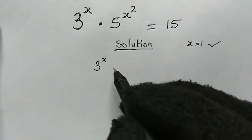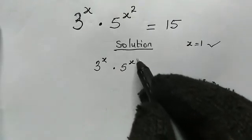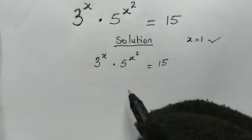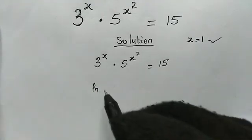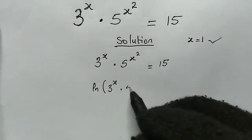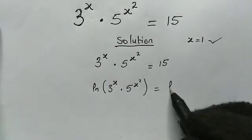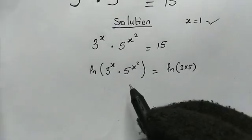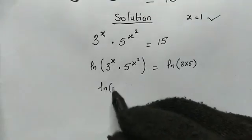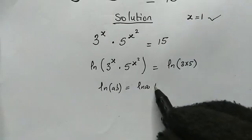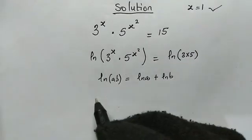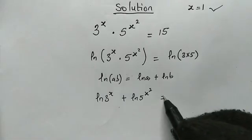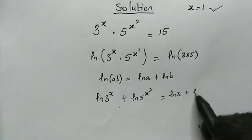So here we have 3 to the power of x multiplied by 5 to the power of x squared, and this is equal to 15. From here let us take the natural log on both sides. So we have the natural log of 3 to the power of x multiplied by 5 to the power of x squared, equal to the natural log of 3 times 5. Using the property that the natural log of a times b equals the natural log of a plus the natural log of b, the left-hand side becomes the natural log of 3 to the power of x plus the natural log of 5 to the power of x squared, and the right-hand side becomes the natural log of 3 plus the natural log of 5.